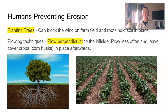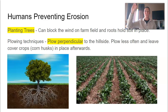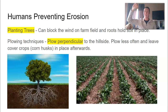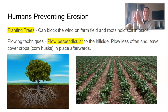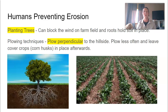Another way is plowing perpendicular to the hillside. We talked about Farmer John and Farmer Joe. One kind of plowed his rows parallel to the hillside, and so they acted like a water slide — water carries it all away. The other one planted perpendicular to the hillside. So if the hill is going down like this, he planted like this. It kind of acts like the bumpy slide at the park and it slows down the water.